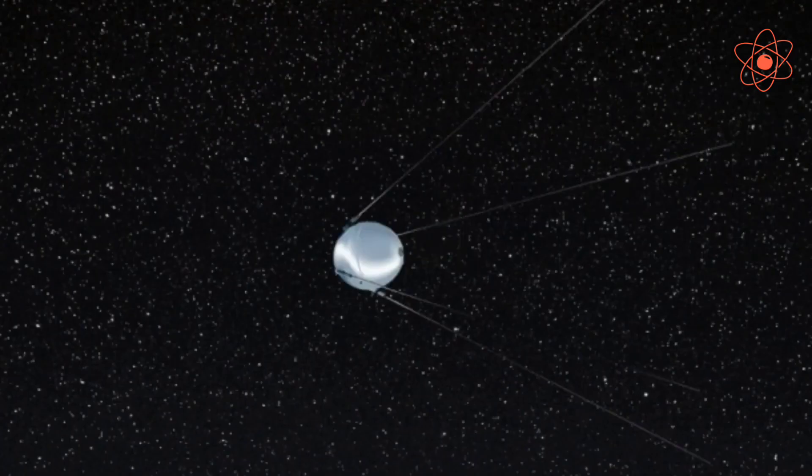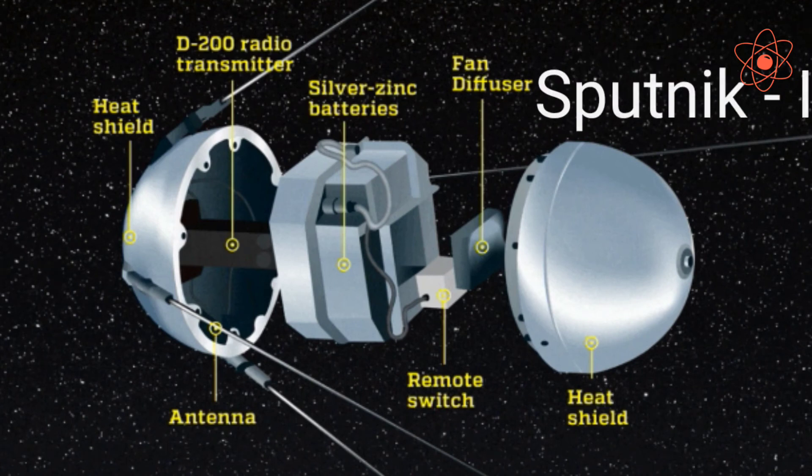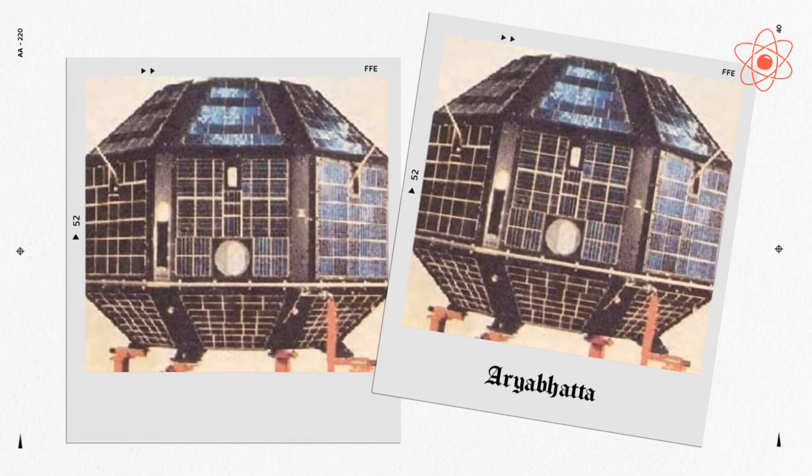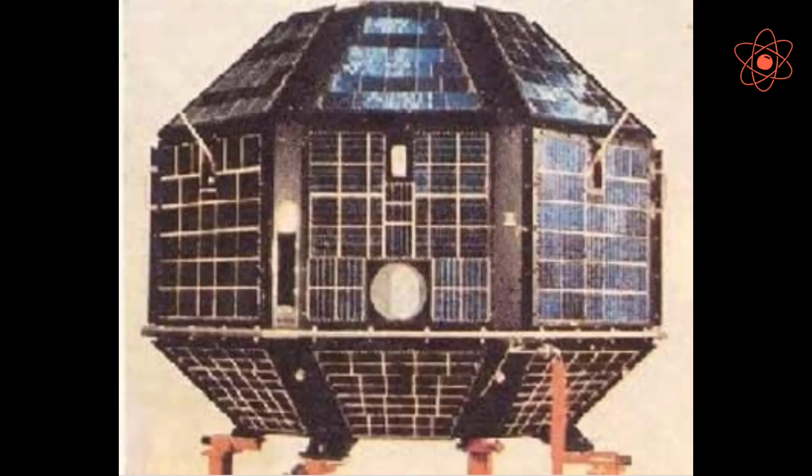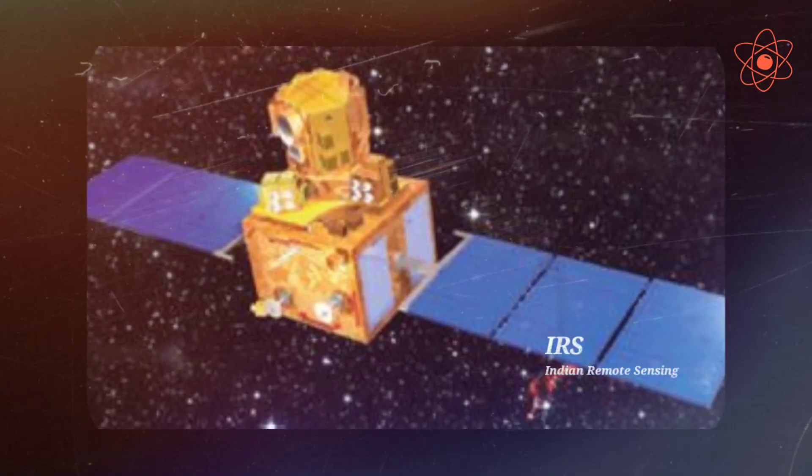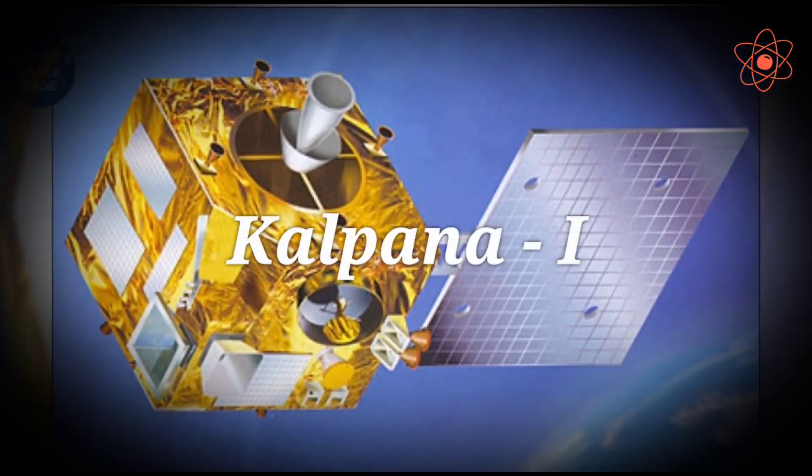The first satellite that was launched in the Earth's orbit was Sputnik 1 on 4th October 1957 by the Soviet Union. Aryabhat was the first Indian satellite which was launched into space by the Soviet Union on 19th April 1975. Some other Indian satellites are INSAT, Indian National Satellite Series, IRS, Indian Remote Sensing Satellite Series, Kalpana 1st etc.